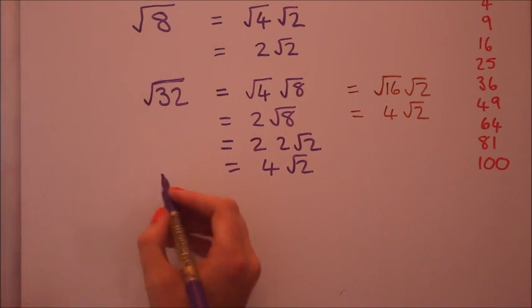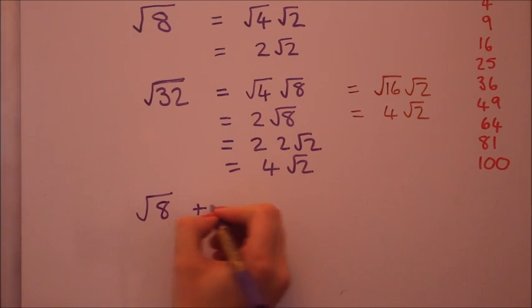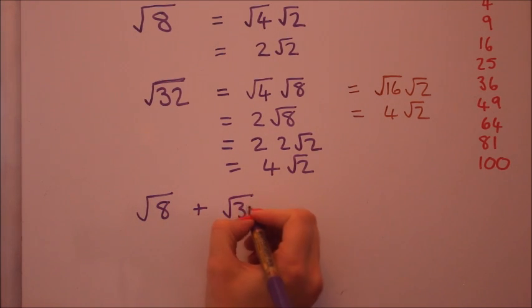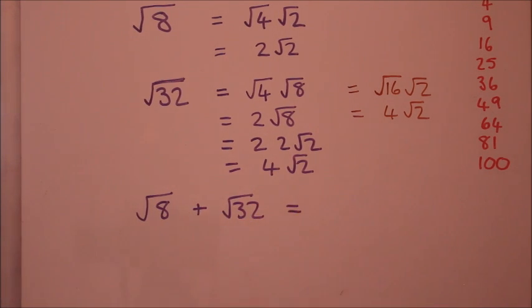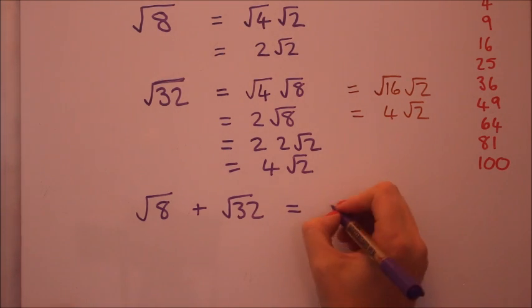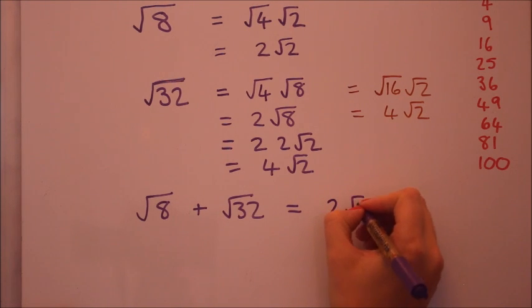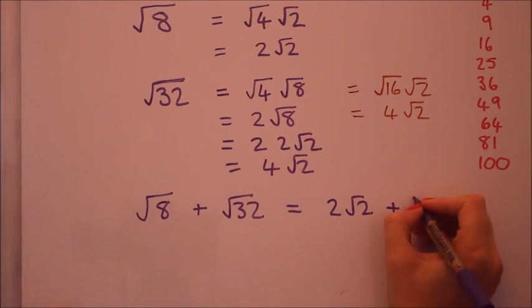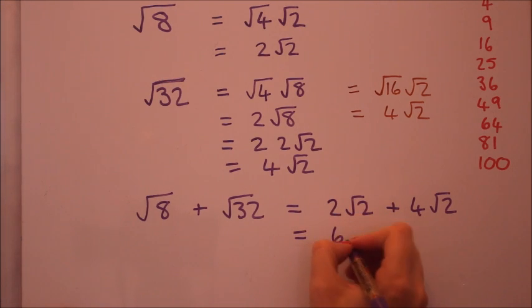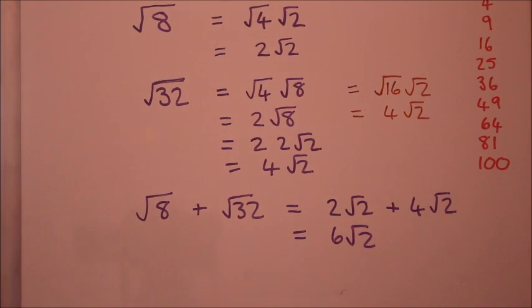One direct application of this is adding surds. If you were given root 8 plus root 32, you wouldn't be able to add them as they stand. It certainly wouldn't be root 40, that would not be right. But you can add them if you simplify the surds so they've got the same base surd. So root 8 is 2 root 2, root 32 is 4 root 2, so 2 root 2 plus 4 root 2 will be 6 root 2.